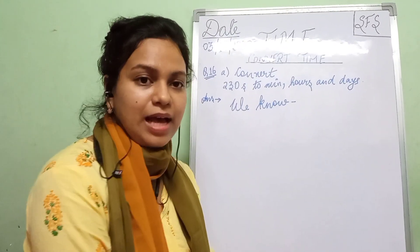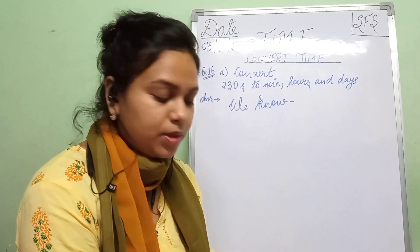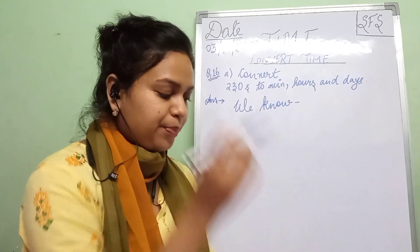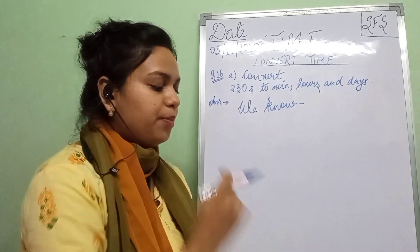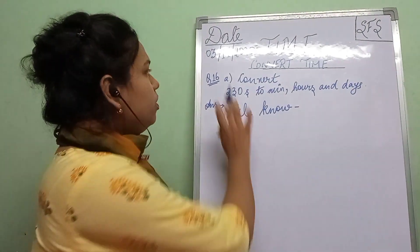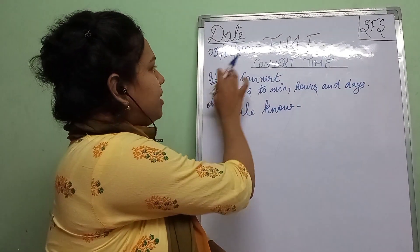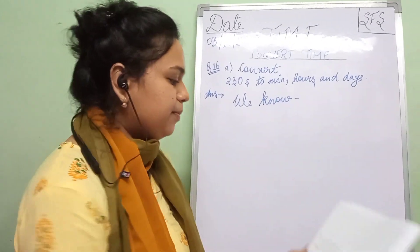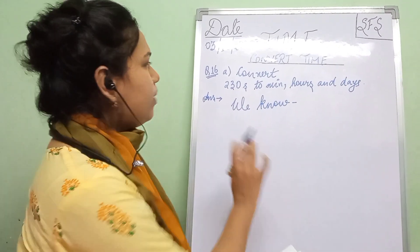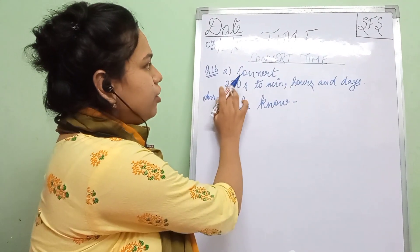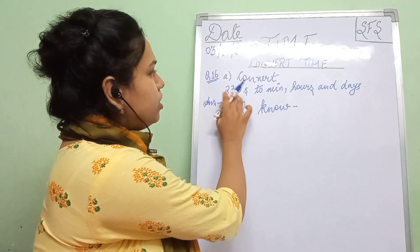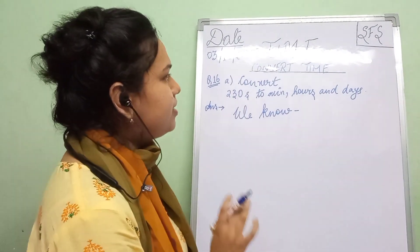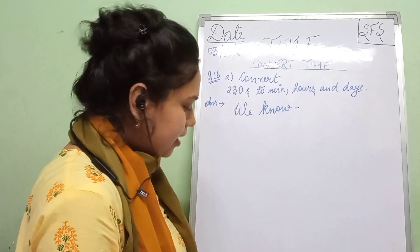Let us do a few of the exercise problems from your workbook. Let us do question number 16a. In question 16a, you have to convert 230 seconds into minutes, hours and days.